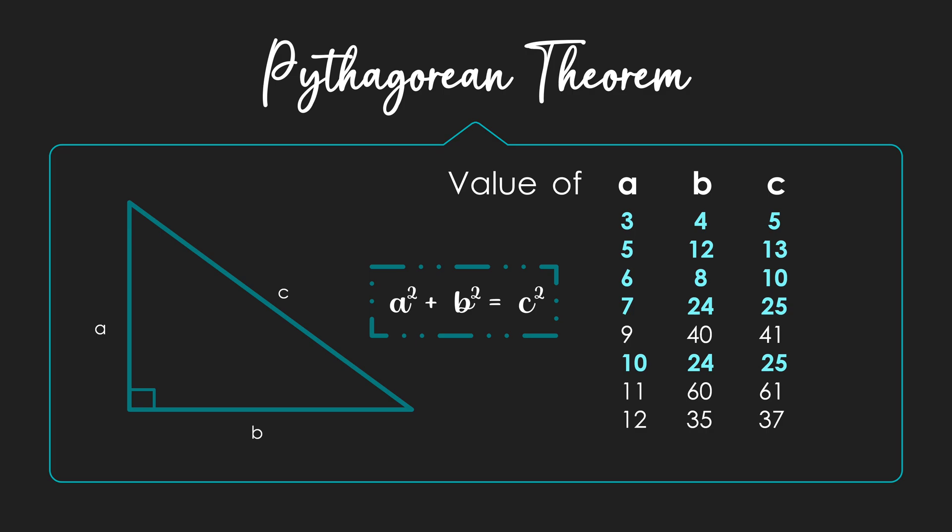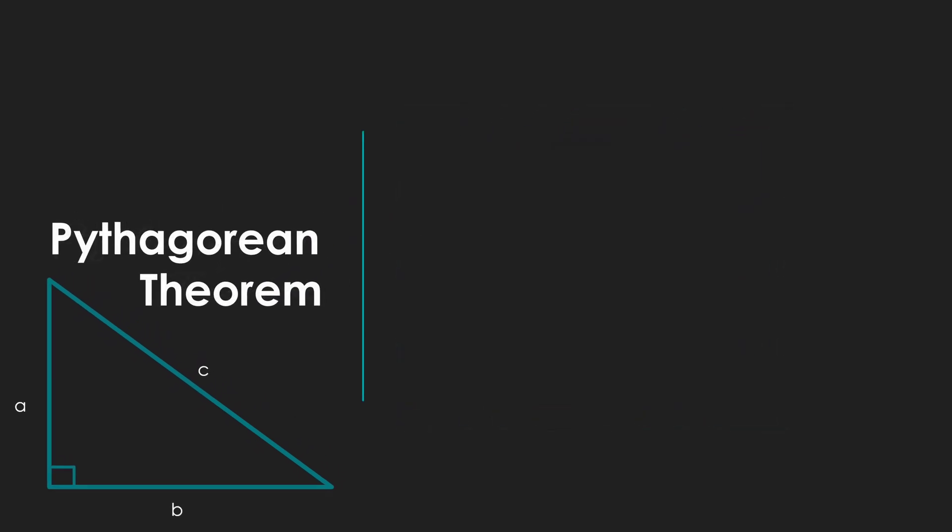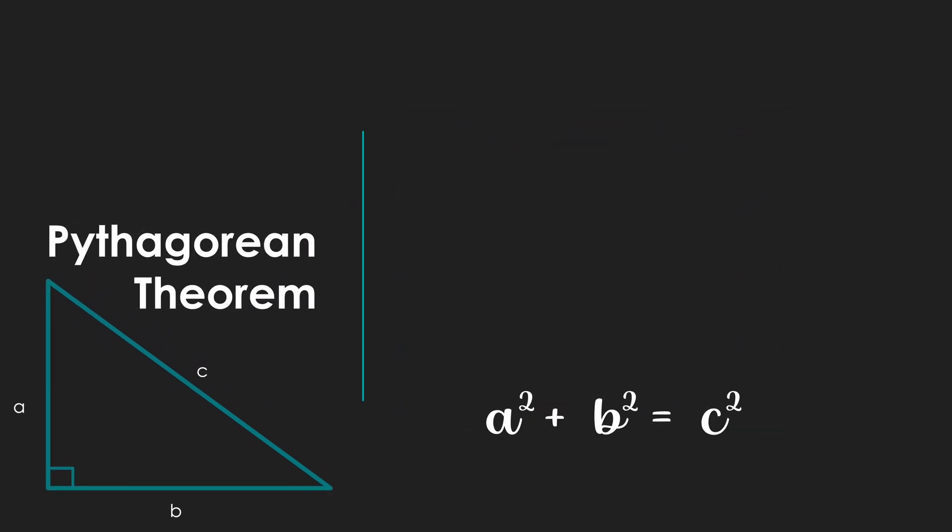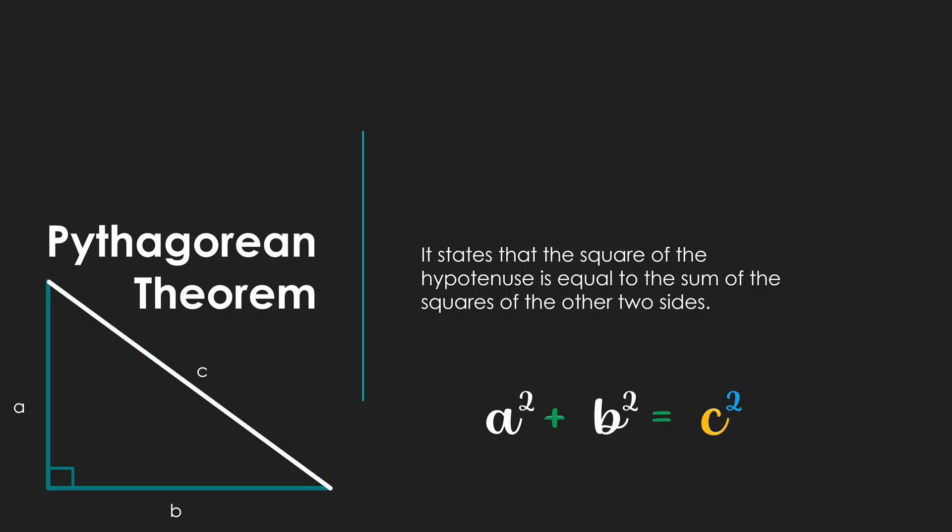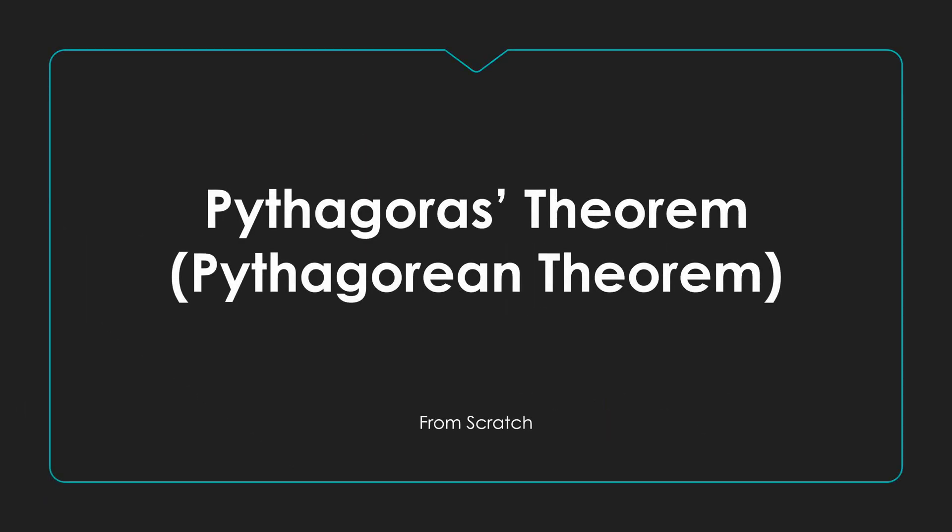Now, coming back to the statement, the Pythagorean theorem states that the square of the hypotenuse is equal to the sum of the squares of the other two sides.